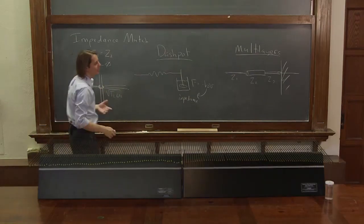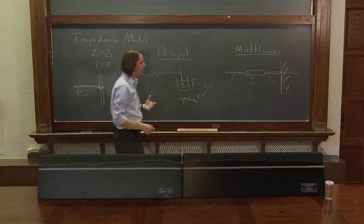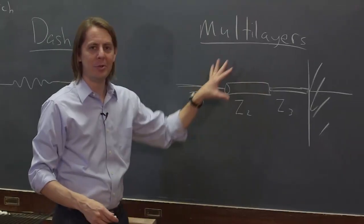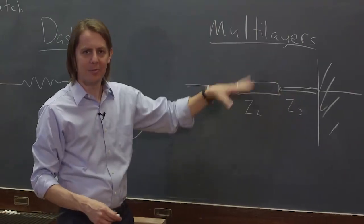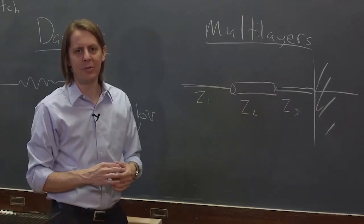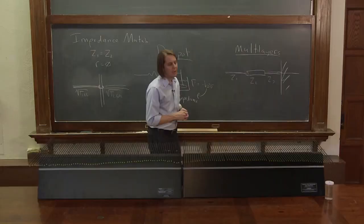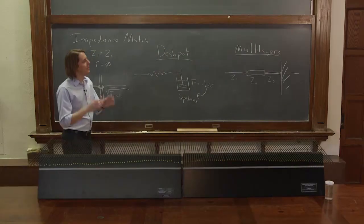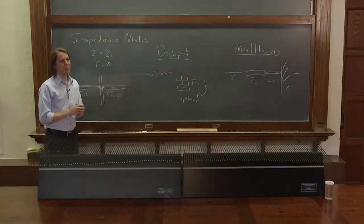When we get into optics and optical materials, we're somewhat limited in our ability to adjust what is effectively their impedance to light. So impedance actually shows up in many kinds of waves, and here you've seen it in our mechanical analog.